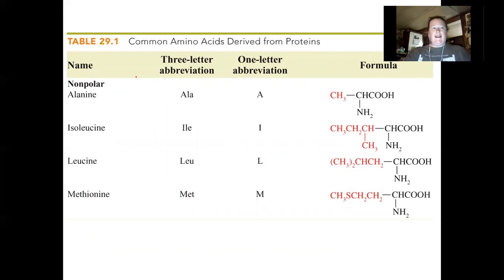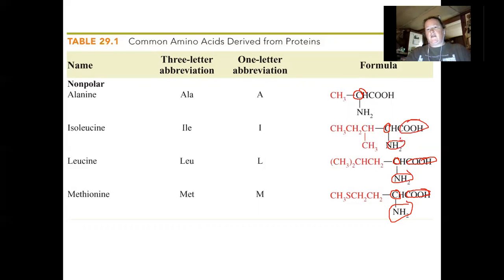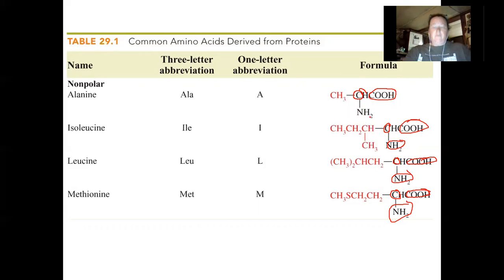Here are some of the nonpolar amino acids. Each has a central carbon with a hydrogen attached, a carboxylate group, and an amino group. The R chains are very rich in hydrocarbons — there is a sulfur in methionine, but these side chains are overall very hydrocarbon-rich, nonpolar, insoluble in water, and hydrophobic.